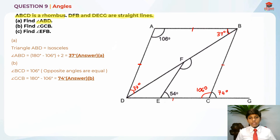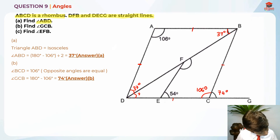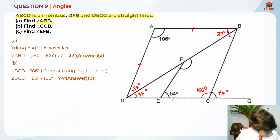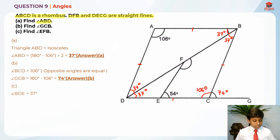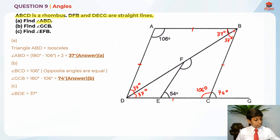Another point: since both triangles are identical, this angle is also 37 degrees and this angle is also 37 degrees. So angle BDE is also 37 degrees, and angle DBC is also 37 degrees.